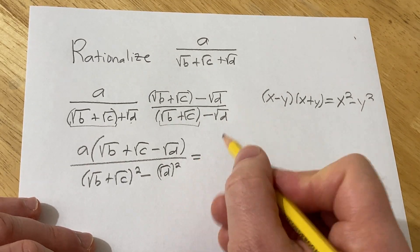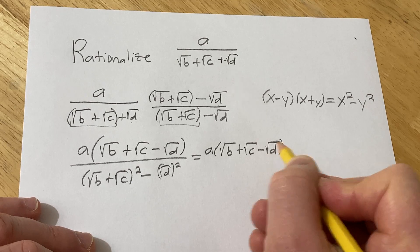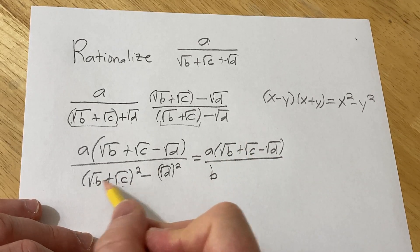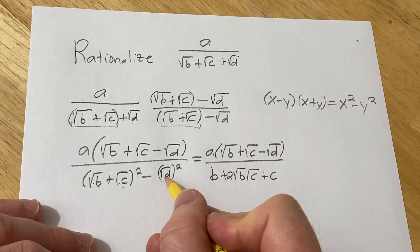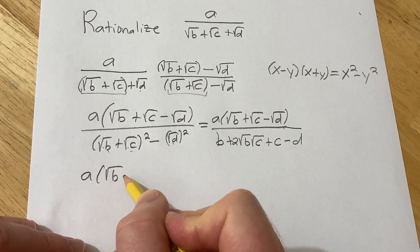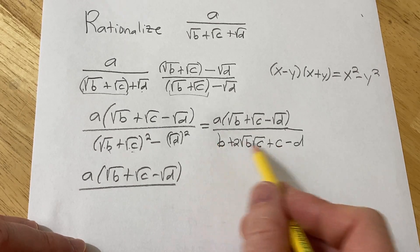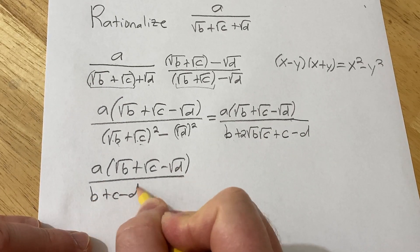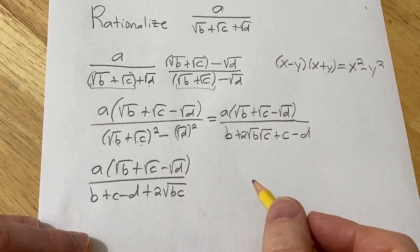Let's clean this up. This is equal to a times parentheses square root of b plus square root of c minus square root of d, over — we're going to square the binomial the fast way: square the first piece to get b, multiply the two terms and double them to get plus two square root of b times square root of c, square the last term to get plus c, minus d. Grouping the non-radical terms: b plus c minus d, plus two square root of bc. Assume everything here is positive.